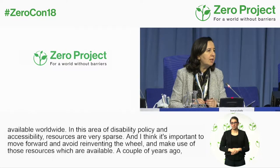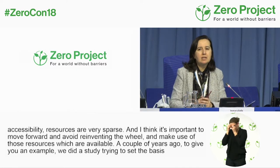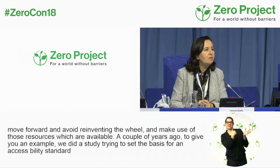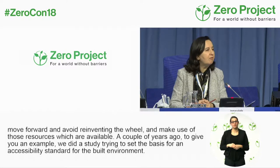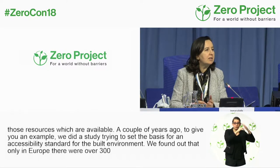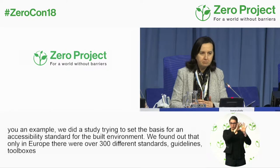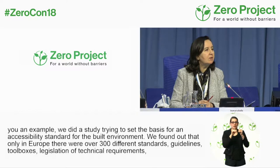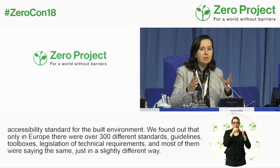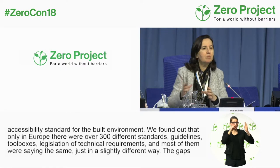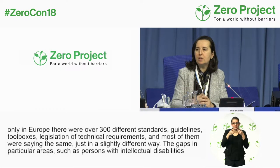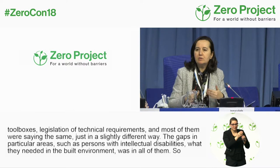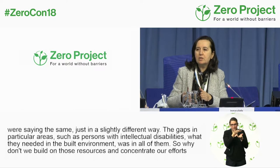A couple of years ago, to give you an example, we did a study trying to set the basis for an accessibility standard for the built environment. We found out that only in Europe there were over 300 different standards, guidelines, toolboxes, and legislations that contain technical requirements, and most of them were saying the same thing in slightly different ways. The gaps in particular areas — for example, persons with intellectual disabilities, what do they need in the built environment — were in all of them. So why don't we build on those resources and concentrate our efforts to close those gaps?